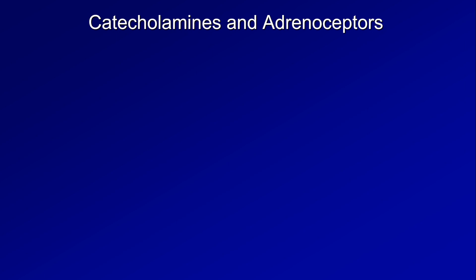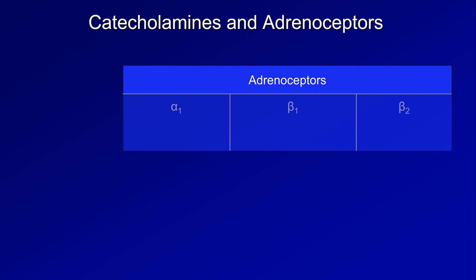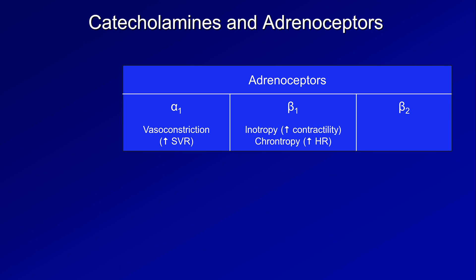The different actions of these drugs are a consequence of differences in which receptors they act on. Catecholamines affect hemodynamics by binding to adrenoceptors — transmembrane proteins that transmit signals to second-messenger systems within cells. There are two major groups: alpha and beta. Activation of alpha-1 receptors leads to vasoconstriction, increasing SVR. Beta-1 activation leads to inotropy and chronotropy — increased contractility and heart rate — dramatically increasing cardiac output. Beta-2 activation leads to vasodilation, decreasing SVR.